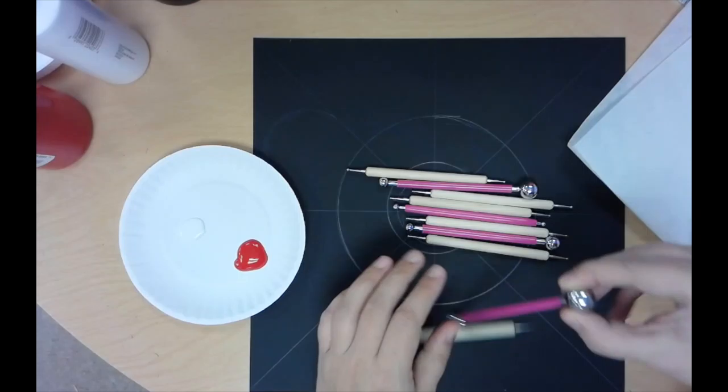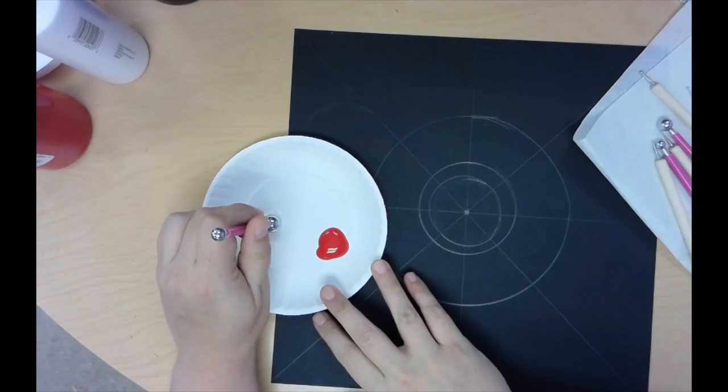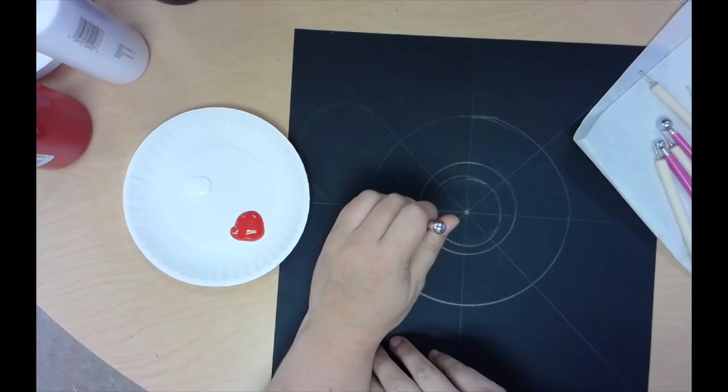In each bag there are a variety of mandala tools. So how this works is obviously the smaller the tip at the end, the smaller dot you're going to have. The bigger the tip at the end, the bigger dot you're going to have. So I just kind of want to play around with it for you so you can see what I'm talking about.